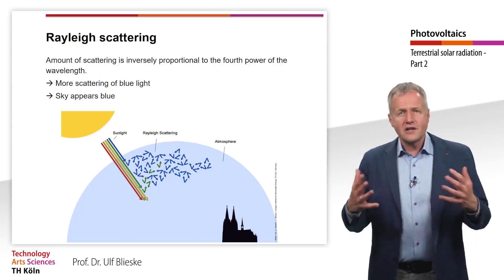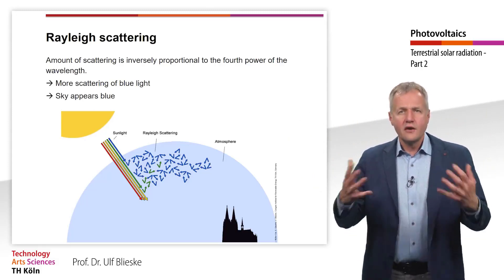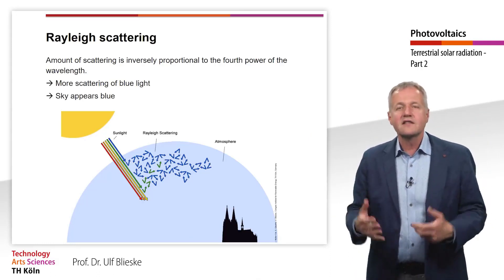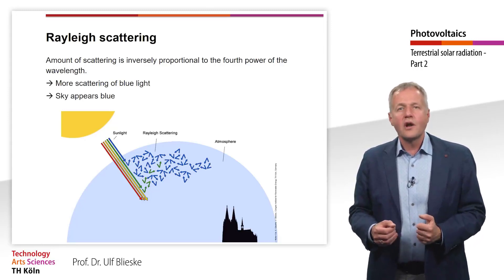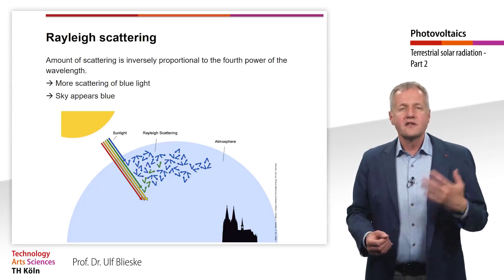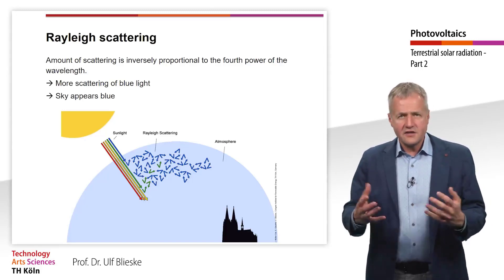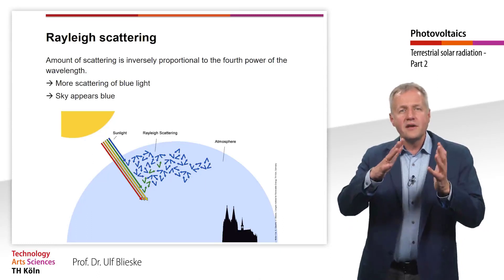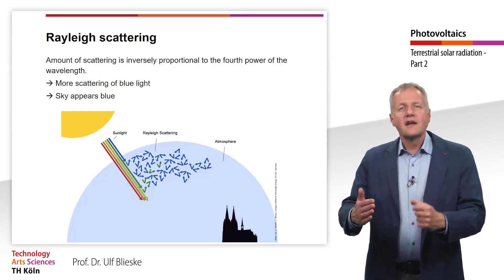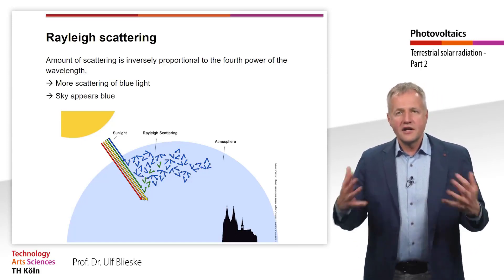The emission of the scattered light takes place in all hemispheric directions. We, as observers on the ground, see the scattered light from all directions, and this scattered light is mainly blue, as only a much smaller radiation density of other wavelengths is scattered — hence, the sky appears blue. On the other hand, as most of the blue light is scattered, the rest of the direct beam appears yellow for sunlight with a high elevation angle, or reddish for sunlight with a low elevation angle, where even green and yellow light will be largely scattered.